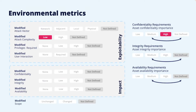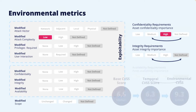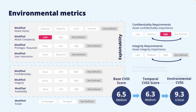In this example, we modify the attack complexity to low — we might see that the attack works every time in our environment. Moreover, in our case the data is very sensitive, so we set the confidentiality requirements to high. All other metrics and requirements are left unchanged from the base metric. The resulting environmental CVSS score is then 9.3, both due to the sensitivity of the data and the lowered attack complexity.